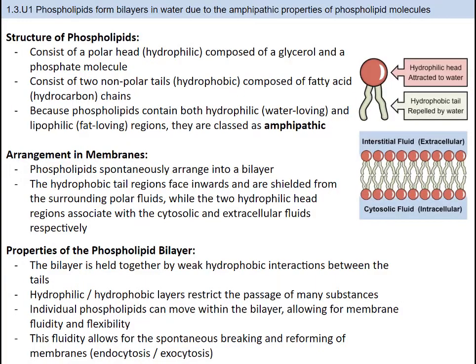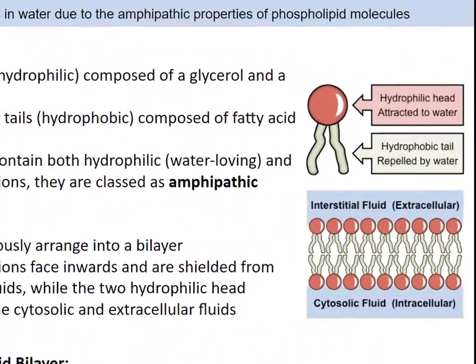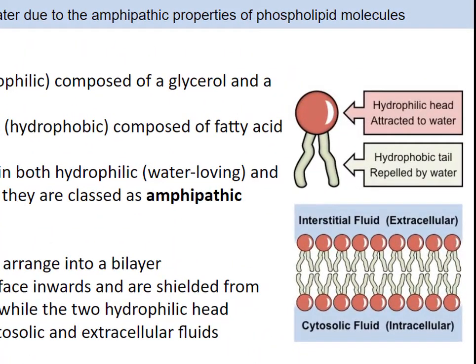The cell membrane isn't just a bland barrier separating outside from inside. It contains multiple components, each working to fulfill its lifelong dream of being the best cell membrane part possible. The first part we come to is the phospholipid. Phospholipids are special as they contain two very distinct ends. They are made up of one end called the hydrophilic end and the other end is called the hydrophobic tail.